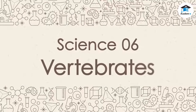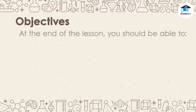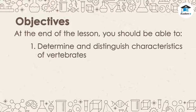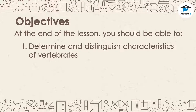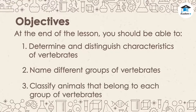Science 6: Vertebrates. Objectives: At the end of the lesson, you should be able to determine and distinguish characteristics of vertebrates, name different groups of vertebrates, and classify animals that belong to each group of vertebrates.